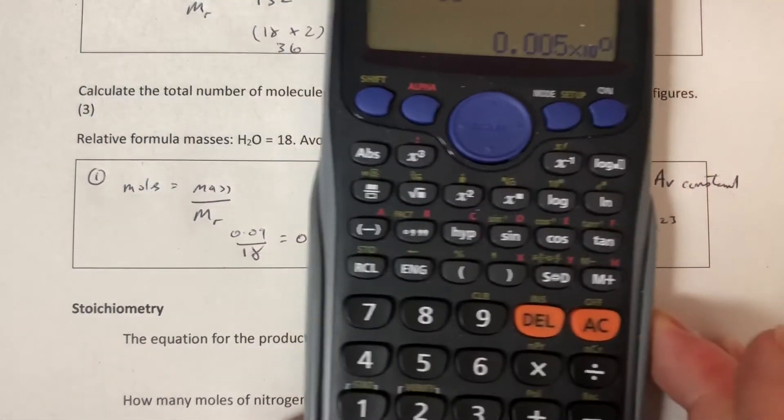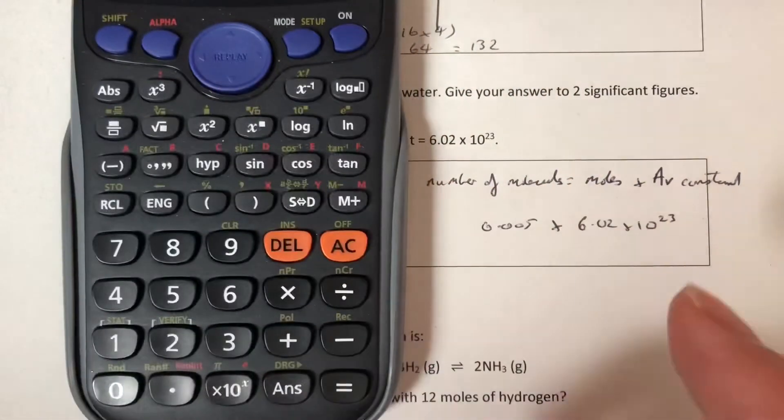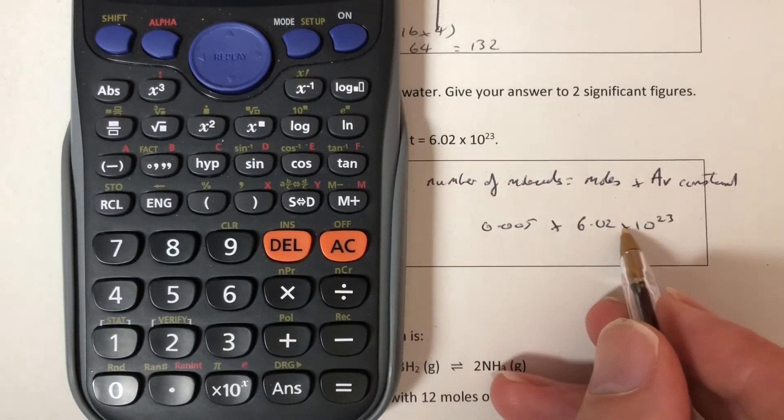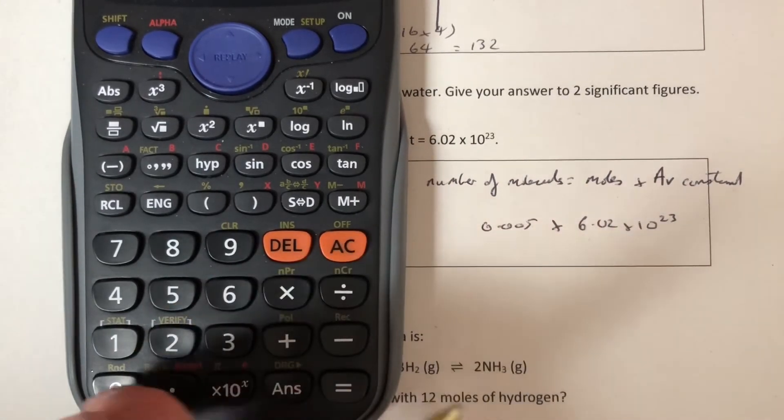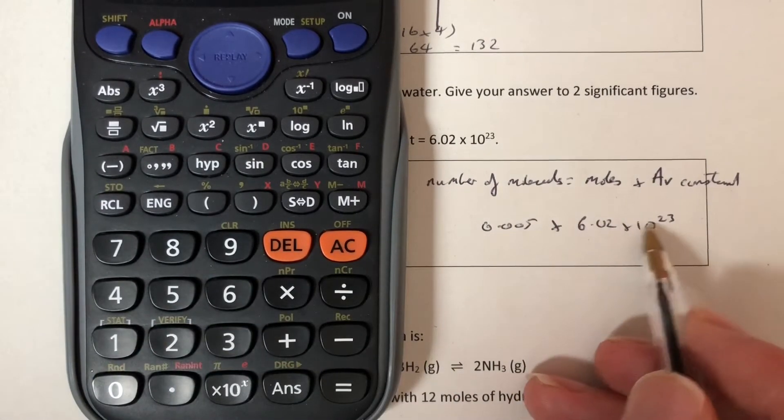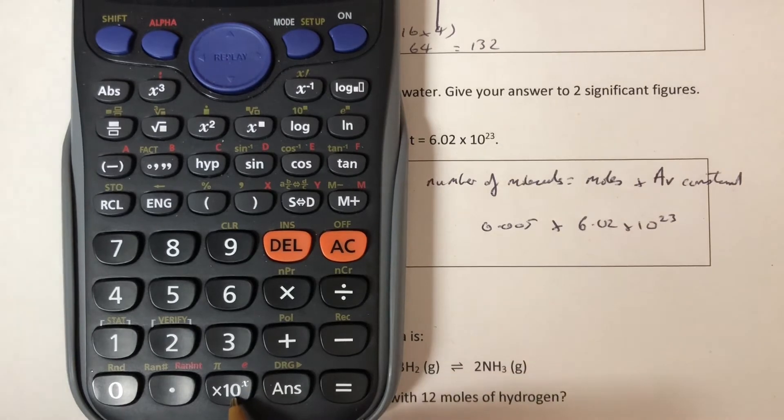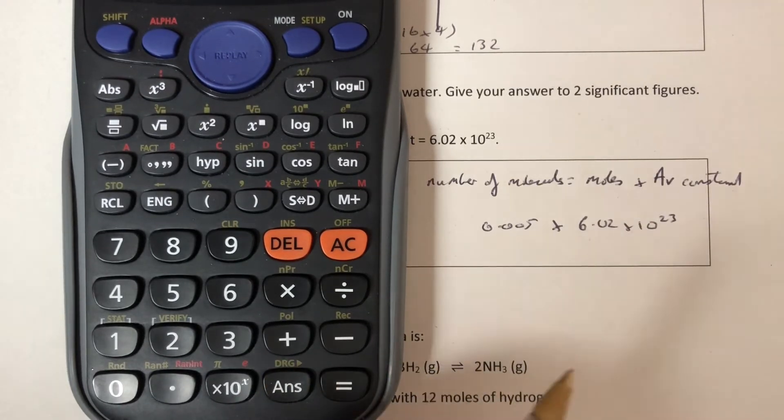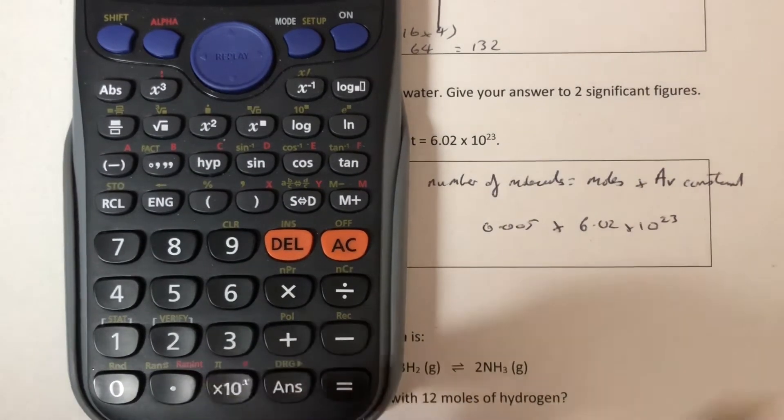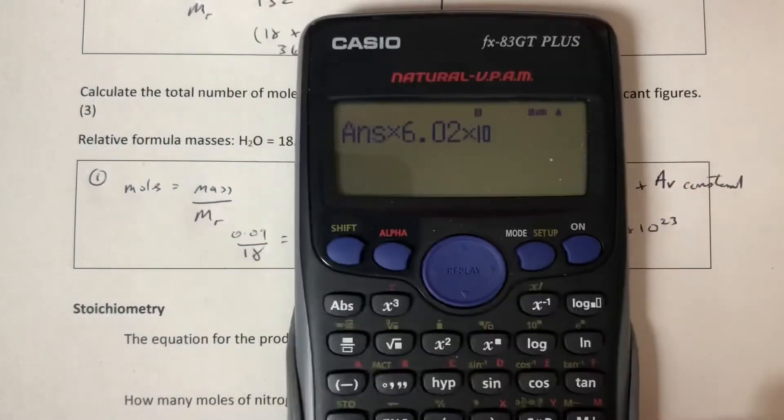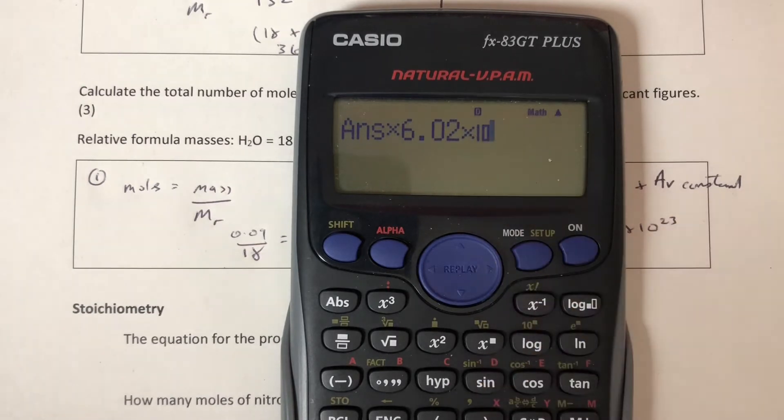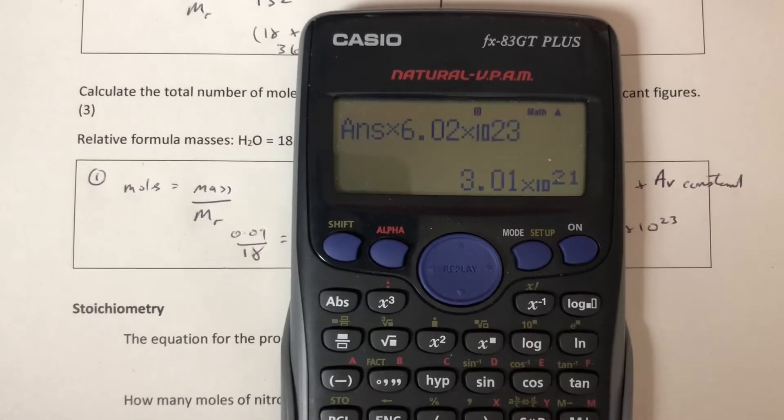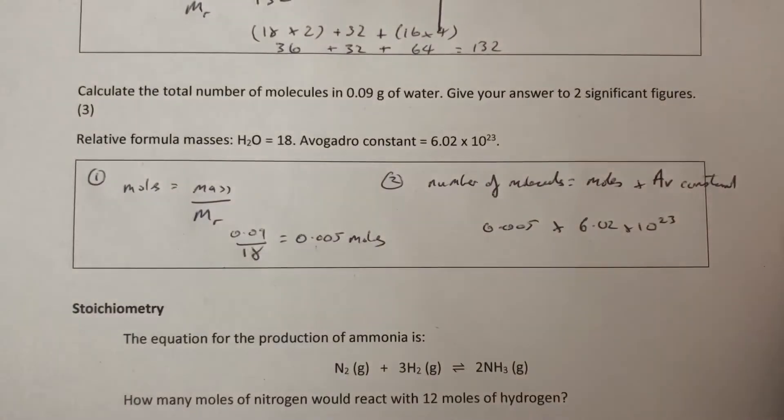We've got 0.005. Now we need to multiply that by 6.02. This is the times 10 button, that button down there at the bottom of the calculator. It's called EXP on some calculators. Times 10 to the 23. You can see on the calculator display this isn't a multiply symbol, this is a times 10. So that equals 3.01 times 10 to the 21.